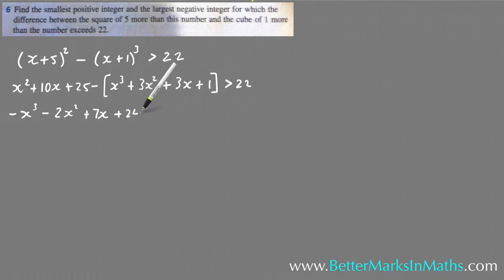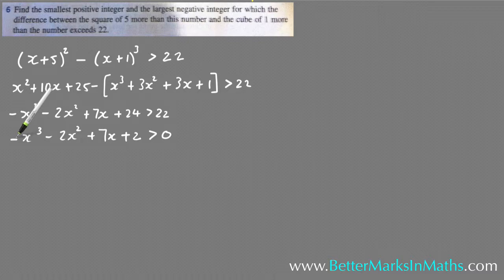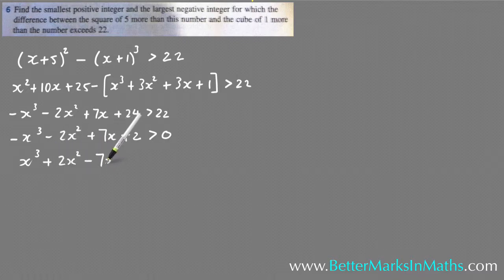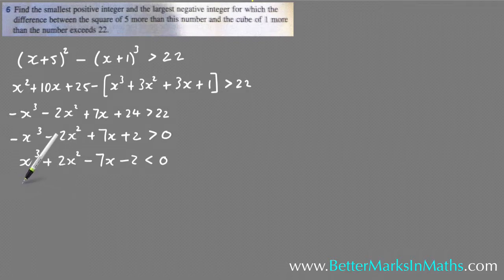So we have -x³ - 2x² + 7x + 24 > 22, which simplifies to -x³ - 2x² + 7x + 2 > 0. To get rid of the leading negative, multiply everything by -1, giving x³ + 2x² - 7x - 2 < 0. Remember: whenever you multiply or divide an inequality by a negative number, the sign reverses.